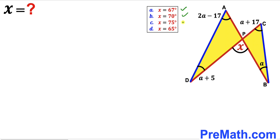We have been given four options for the x value: x could be 67 degrees, x could be 70 degrees, x could be 75 degrees, and finally x could be 65 degrees.